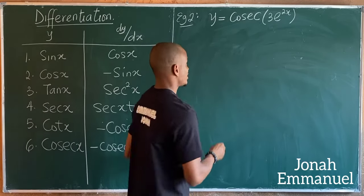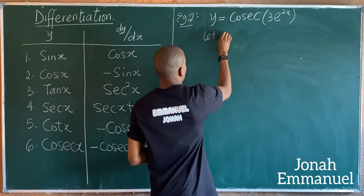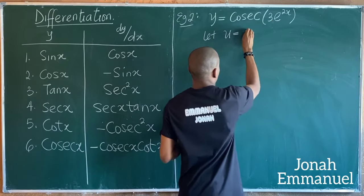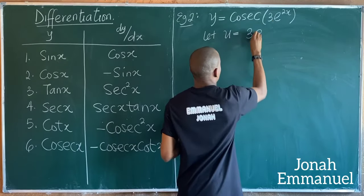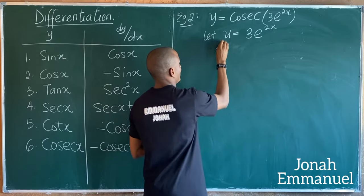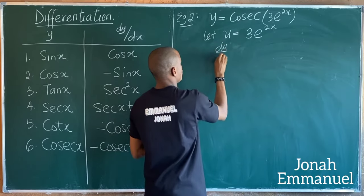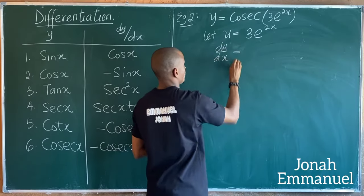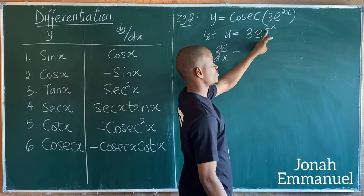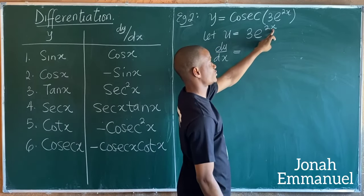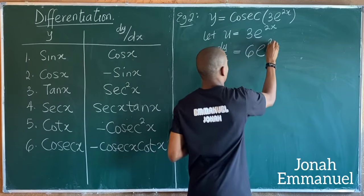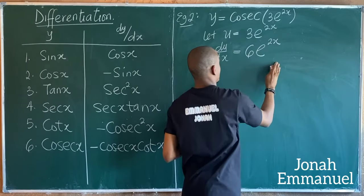Let u be equal to what I have in the bracket: 3e^(2x). If I differentiate this, du/dx is equal to — using the shortcut for exponential differentiation — 2 times 3 gives 6, so du/dx = 6e^(2x).